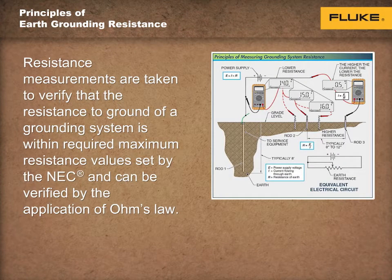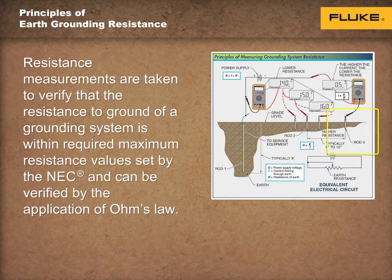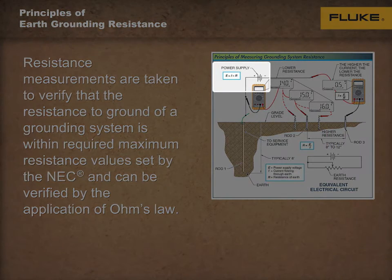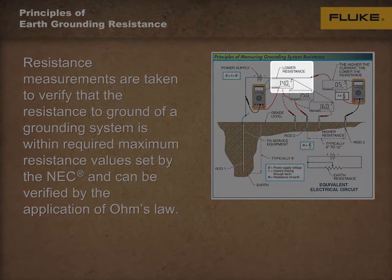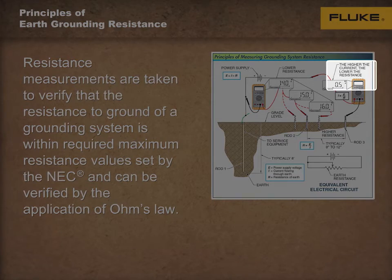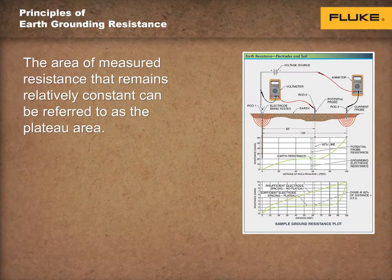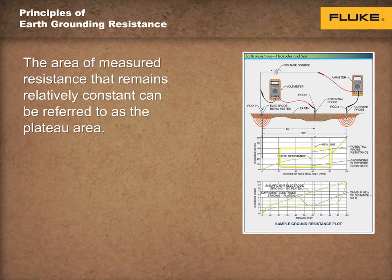Source voltage from a power supply is applied between the outside rods, rod 1 and rod 3. A current measurement device is connected into the circuit to measure the current draw from the power supply. The current draw from the power supply is inversely proportional to the resistance of the circuit created, or earth resistance. The lower the measured resistance, the higher the fault current carrying capacity of the circuit. Likewise, the higher the measured resistance, the lower the fault current carrying capacity of the circuit. For most measurements, areas are reached where the rate of increase in the resistance of the earth is low and where the resistance remains relatively constant for a set distance. The area of measurement where the resistance remains relatively constant can be referred to as a plateau area.